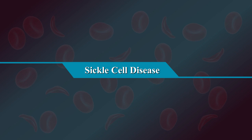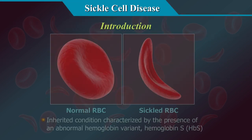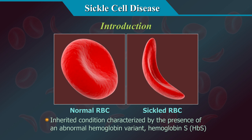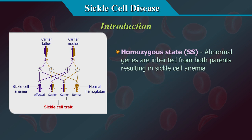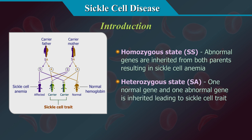Sickle cell disease is an inherited condition characterized by the presence of an abnormal hemoglobin variant, hemoglobin S, called HbS. When HbS exists in a homozygous state, it results in sickle cell anemia, and in a heterozygous state, it results in sickle cell trait.